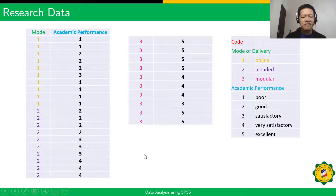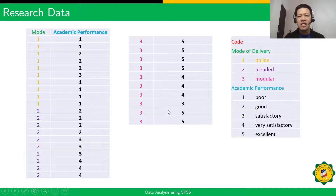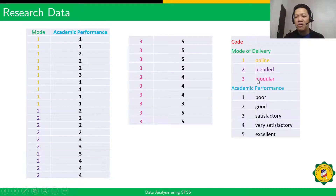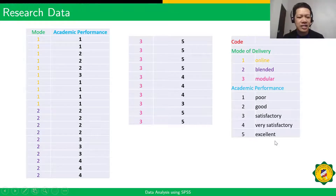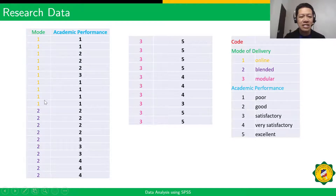Let's say we have this dataset. We need to organize our data using codes because both variables are nominal or ordinal. For the mode of delivery of teaching learning, we use one for online, two for blended, and three for modular. For the academic performance, we use one through five to indicate poor to excellent. In these three modes of delivery, there are 10 student participants for each mode.